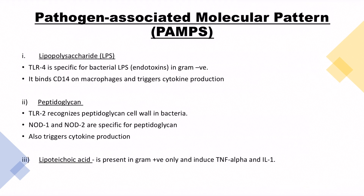Now what are the different examples of PAMPs? In our warzone example, the bacteria raised the flag of LPS, but there are many types of flags. Lipopolysaccharide: TLR4 is specific for bacterial LPS present in gram-negative bacteria; it binds CD14 on macrophages and triggers cytokine production — very high yield. You need to remember TLR4 and CD14. Peptidoglycans: TLR2 recognizes peptidoglycans in bacterial cell walls; NOD1 and NOD2 are also specific for peptidoglycans, and like LPS they trigger cytokine production.